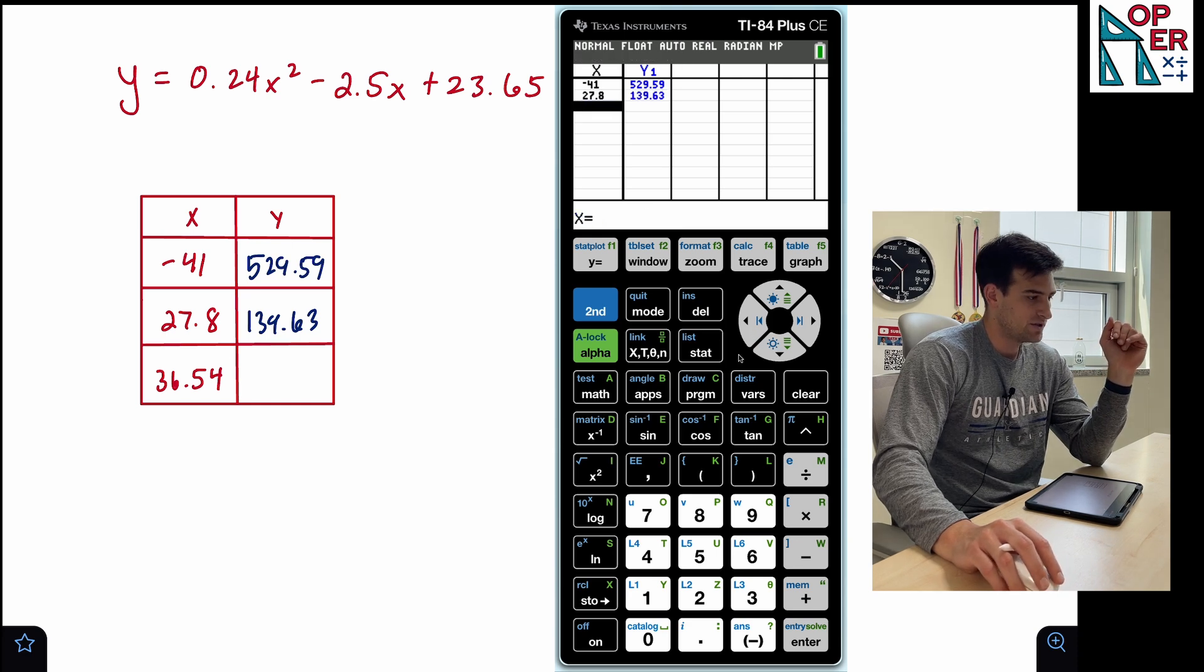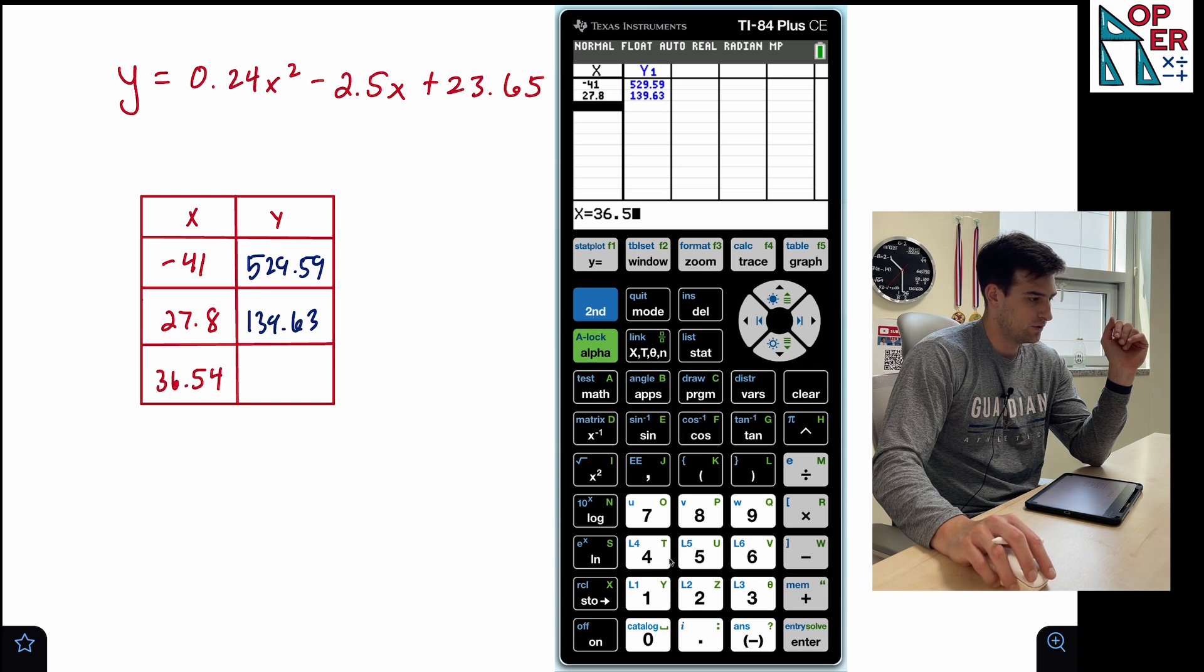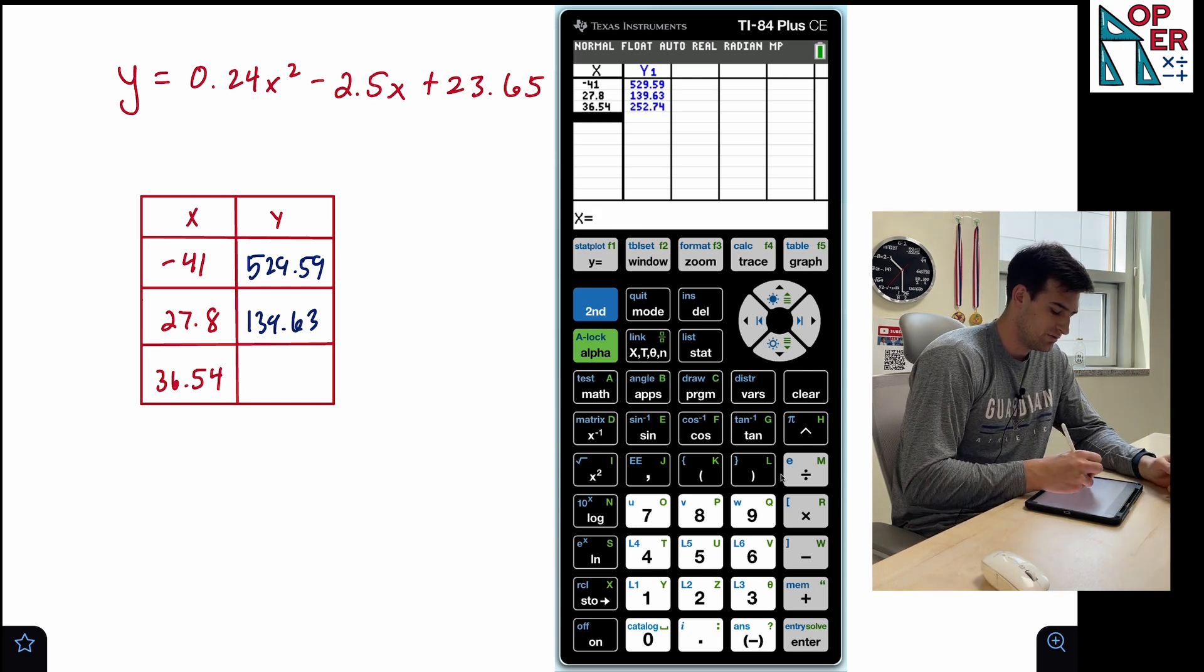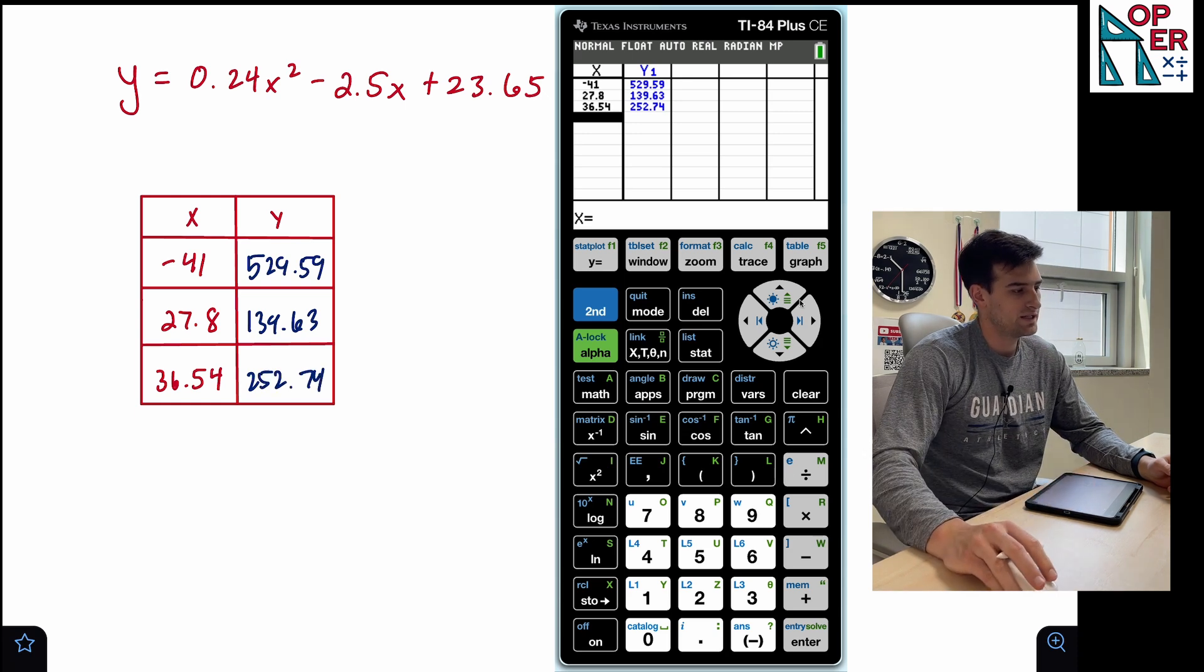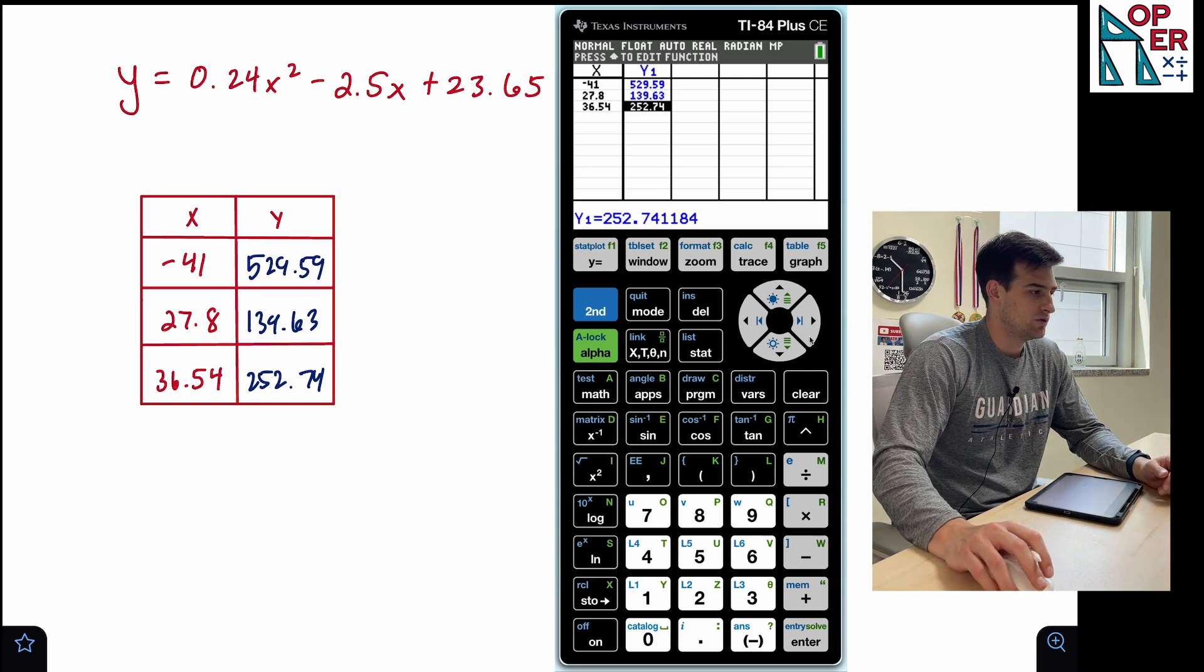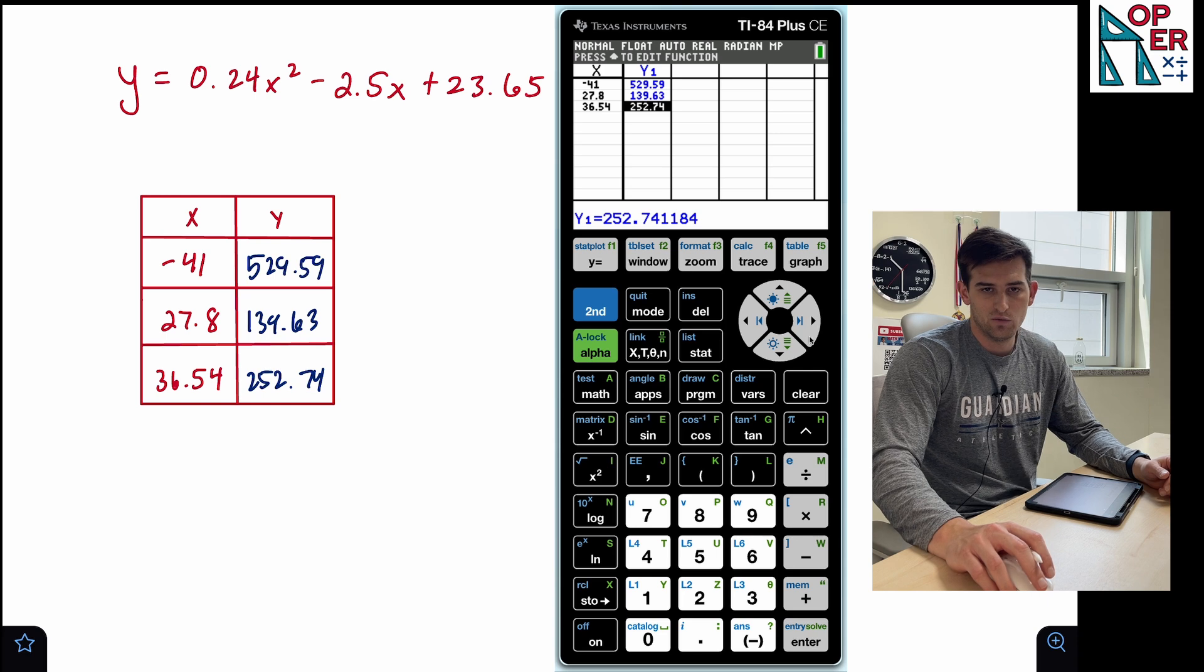All right, and the last one we need to do is 36.54. We hit enter there and it gives us 252.74. And once again, if we check that, see it does have more decimals, more values to the right of the decimal on that. So once again, you could round it to whatever you want.